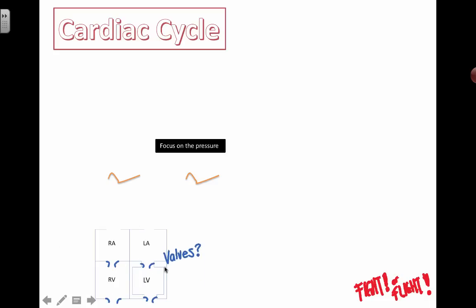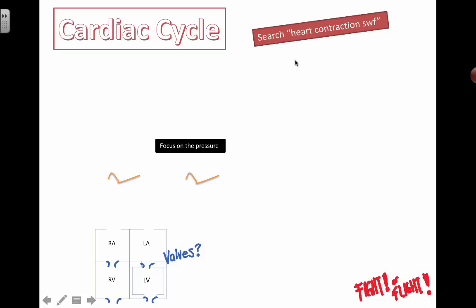You'll be able to name the valves. These are called atrioventricular valves because they're valves separating the atria and the ventricles, and then there are the semilunar valves. This is just to help you understand the flow — it's not what the actual heart looks like. If you go to any browser and type in 'heart contraction SWF,' you'll be able to see the heart actually beating, which will make a lot more sense.